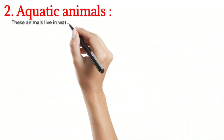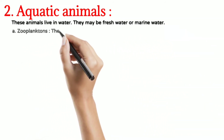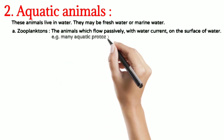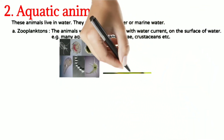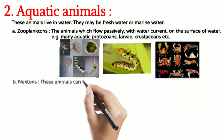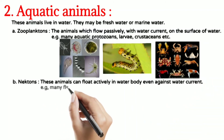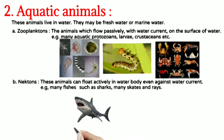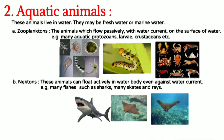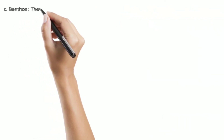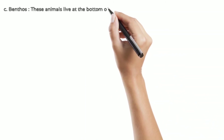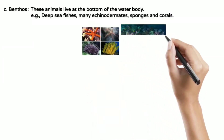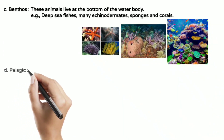The second type is aquatic habitat, where animals live in water. Zooplankton are animals that float passively on water — examples include protozoa, larvae, and crustaceans. Nekton refers to animals that actively swim against the current — like sharks, skates, and rays. Benthos are animals which live at the bottom of the water body — like deep-sea fishes, echinodermata, sponges, and corals. Pelagic animals live on the surface of the water body — zooplankton and nekton are pelagic.